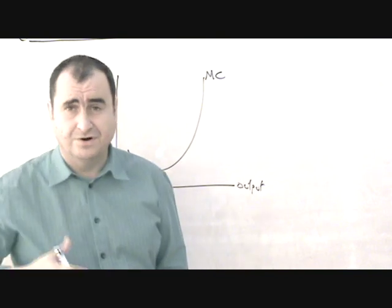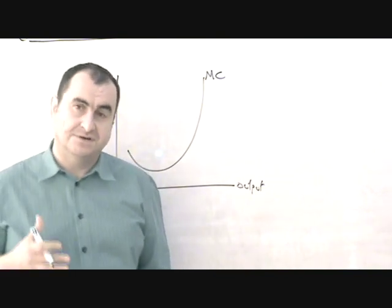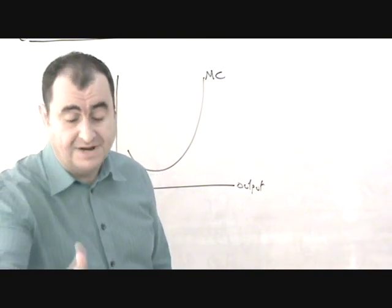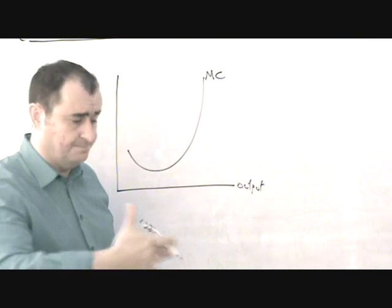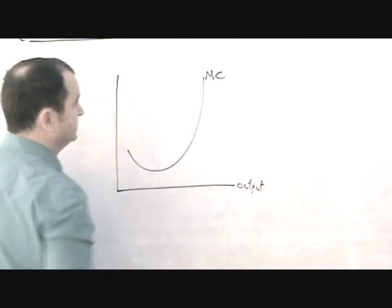You can't add more and more of a variable factor of production to work with fixed quantities of other factors of production and expect to continually raise output by bigger and bigger amounts. It just doesn't happen. So each extra unit gets more and more expensive to produce.